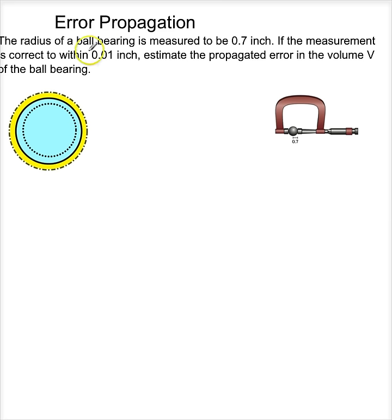Suppose, for example, I have the radius of a ball bearing is measured to be 0.7 inches. So I'm measuring r is 0.7 inches, and I'm going to write the word measured here to remind me that it's measured. If the measurement is correct within 0.01 inches.